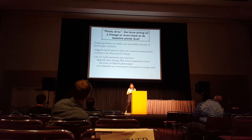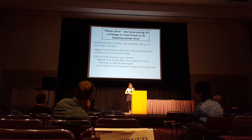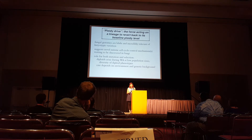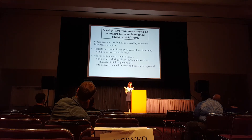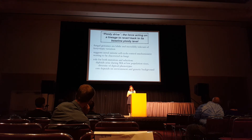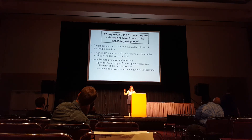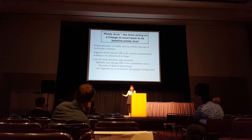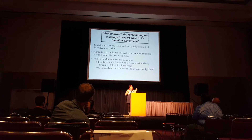Fungal genomes are super labile and incredibly tolerant of karyotypic variation — very different from humans, who are not tolerant of karyotypic variation. This suggests that some novel mitotic cell cycle control mechanisms are waiting to be discovered. I keep waiting for someone to just sit in front of a microscope for three days and track the chromosomes, which is something we can do. This also suggests a role for both mutation and selection: we see diploids arising even in mutation accumulation experiments at low population sizes, and we saw the diversity of diploid phenotypes, suggesting they're repeatedly evolving. The rate also depends on environment and genetic background, so both mechanisms are contributing.